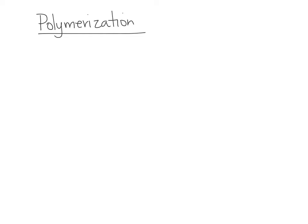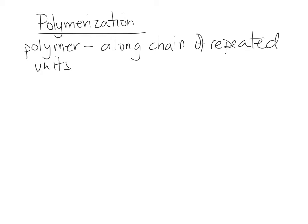Poly means many, so a polymer is a long chain of repeated units, and these units are called monomers. Depending on what compound the monomer is, depends on what type of product you're making.